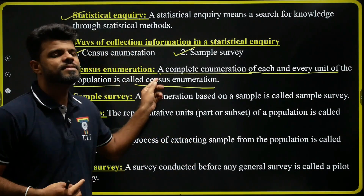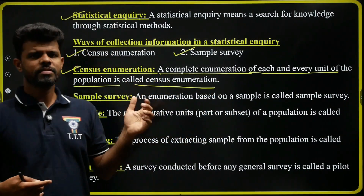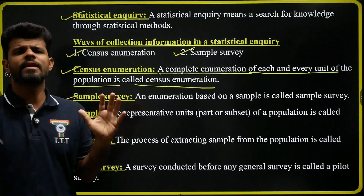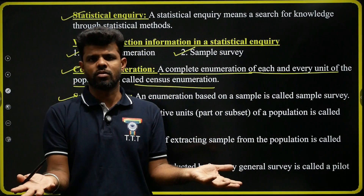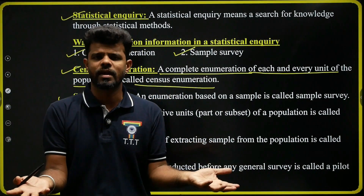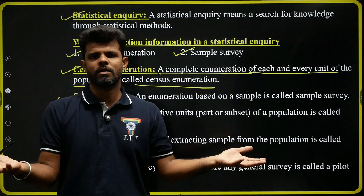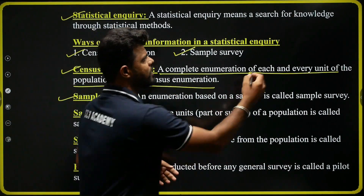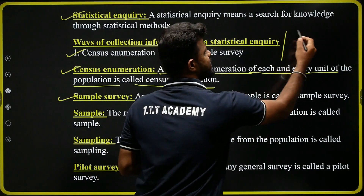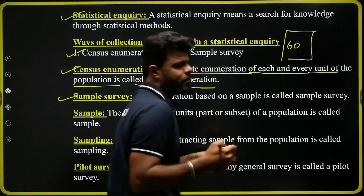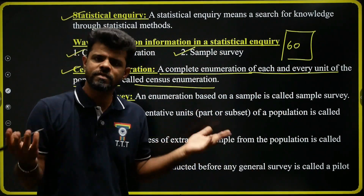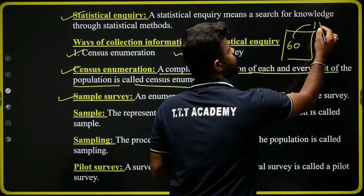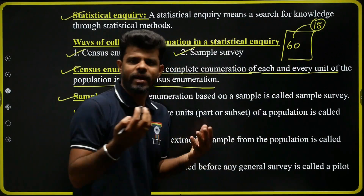Number two is sample survey. In sample survey, we do not collect data from all the people. We will choose some students. For example, in a particular class there are 60 students, but I will not collect data from all the students — I will select only 15, 10, or 5 students.